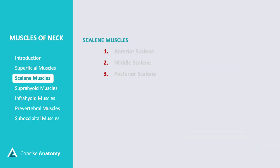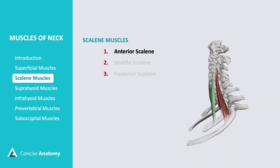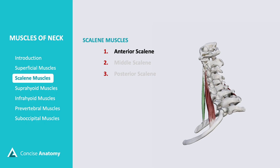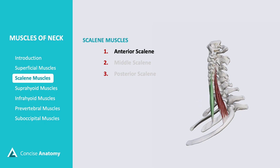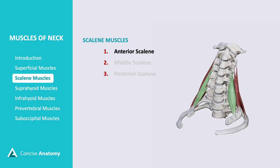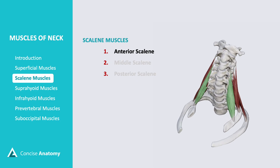The scalene muscles are a group of three paired muscles located in the lateral neck, playing a key role in neck movement and respiration. The anterior scalene muscle runs from the cervical vertebrae to the first rib. It assists in neck flexion, lateral bending, and elevates the first rib during inspiration.